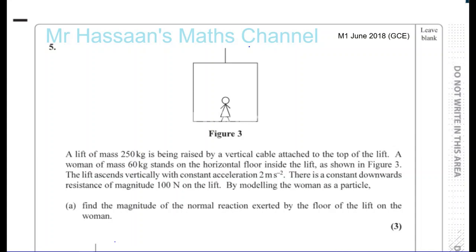We have question number five from Mechanics 1 June 2018, the GCE version, not the international A-level version. A lift of mass 250 kilograms is being raised by a vertical cable attached to the top of the lift. A woman of mass 60 kilograms stands on the horizontal floor inside the lift. The lift ascends vertically with a constant acceleration of 2 meters per second squared, and there is a constant downward resistance of magnitude 100 newtons on the lift.